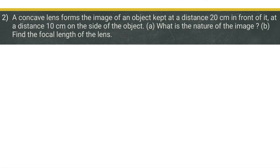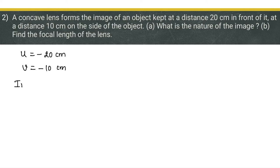Second numerical: a concave lens forms the image of an object kept at a distance of 20 centimeters in front of it, at a distance of 10 centimeters on the same side as the object. So object distance u = -20 centimeters, and v = -10 centimeters since the image is on the same side as the object. We want to find the nature of the image. Since the image is on the same side as the object, the image is virtual.